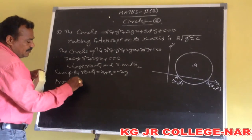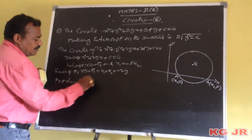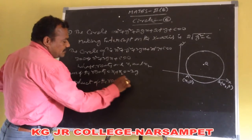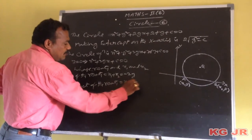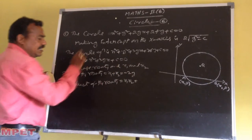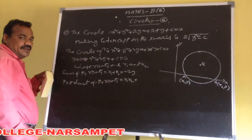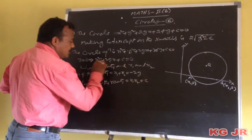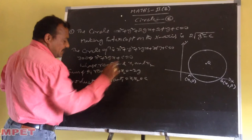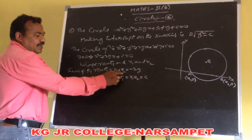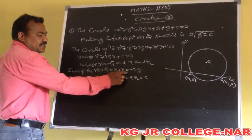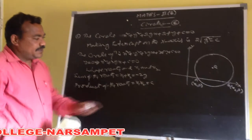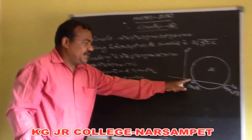And the product of the roots: x1 times x2 is equal to constant divided by coefficient of x square. Here the constant is c and the x square coefficient is 1, so x1·x2 = c. These are the values x1 plus x2 and x1·x2.